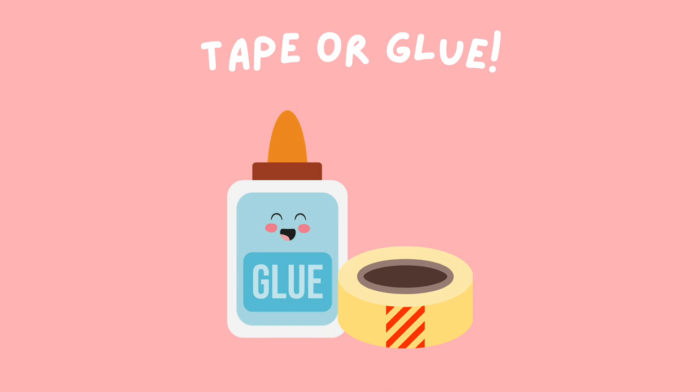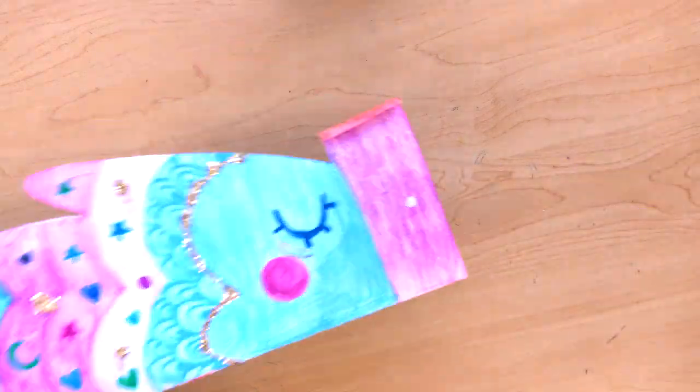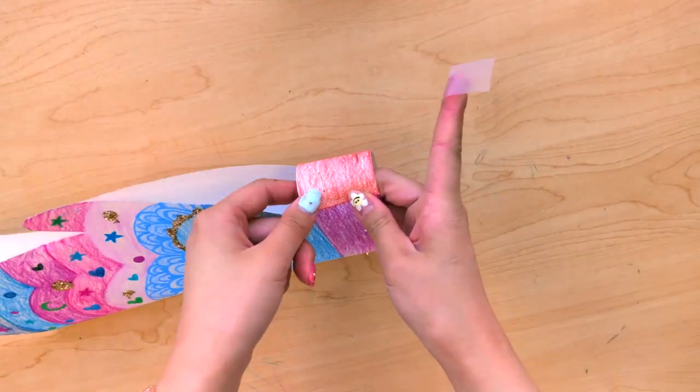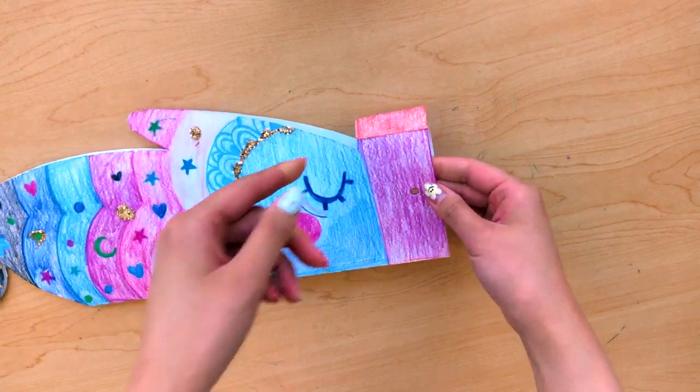Tape or glue. Something optional I did is add glitter to my fish. I'm not sure if this is a good choice because it did get everywhere, but this is something optional that you may do. I'm going to go ahead and get where the tabs are and fold these over one another, and tape it down with just a piece of tape.